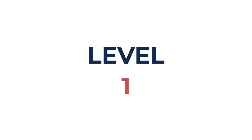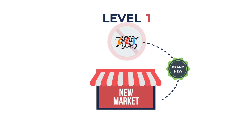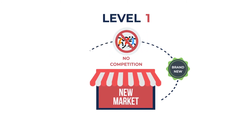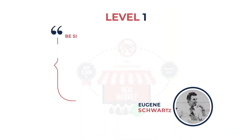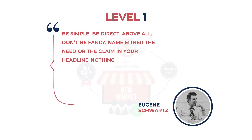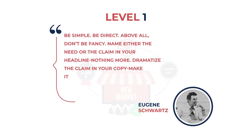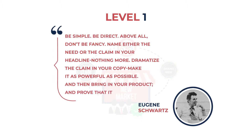Level one. This is the birth of a market, a brand new market. There is literally no competition. At this stage, you can make pretty much any claim and people will buy it. For each level, I'm going to read the actual description from Eugene Schwartz, just so that it is crystal clear. Level one: Be simple. Be direct. Above all, don't be fancy. Name either the need or the claim in your headline. Nothing more. Dramatize the claim in your copy. Make it as powerful as possible, and then bring in your product and prove that it works.